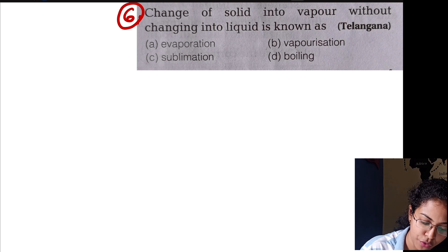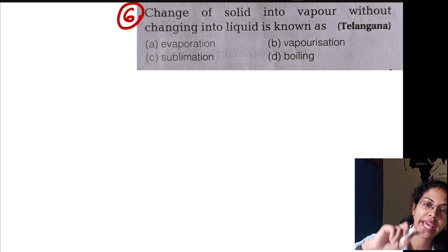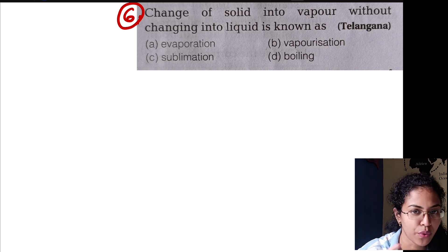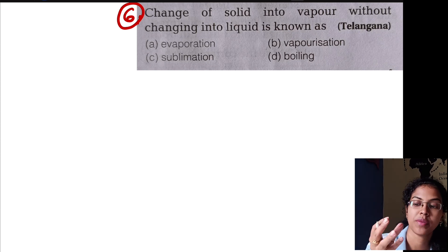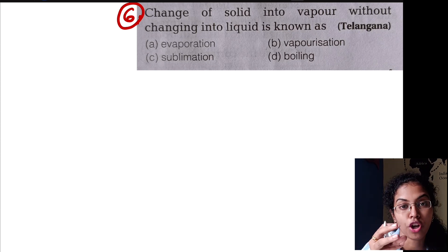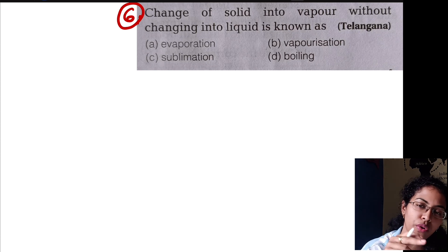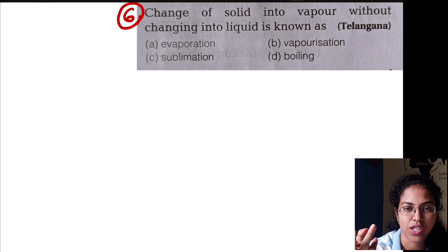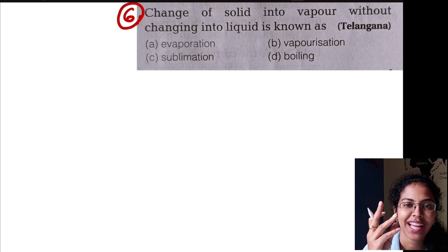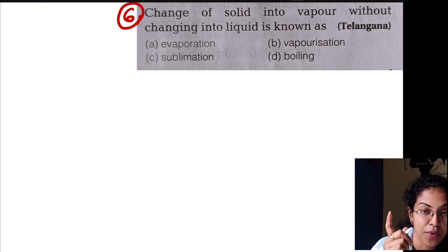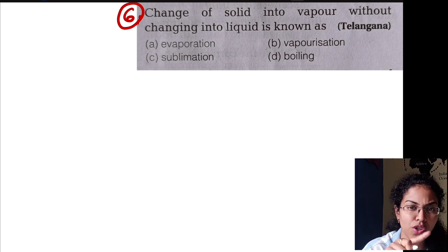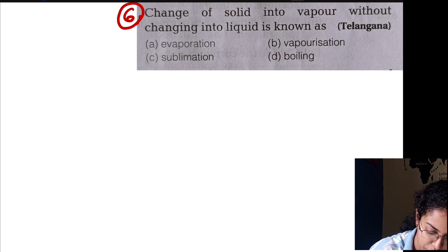Change of solid into vapor without changing into liquid is known as sublimation. Solid to direct vapor — not going through the liquid intermediate state. For example, solid copper evaporates directly to gas. Solid to direct gas — this is sublimation.